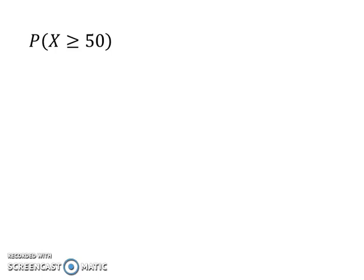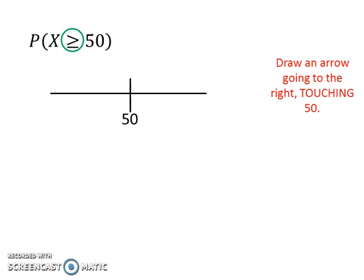To determine whether to add or minus 0.5, draw a line with 50 on it like this. Because of the greater than or equals sign here, we need to draw an arrow going to the right of 50, touching the 50. In order for the arrow to touch 50, we reverse a little bit from 50. Since we reverse a little bit, we need to minus 0.5 from 50. Thus, the probability becomes probability of x greater than 49.5.